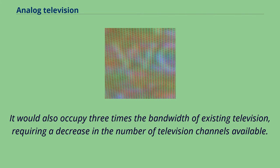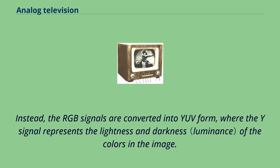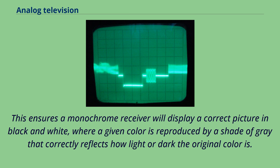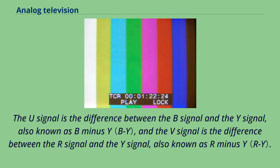Instead, the RGB signals are converted into YUV form, where the Y signal represents the lightness and darkness of the colors in the image. Because the rendering of colors in this way is the goal of both black and white film and black and white television systems, the Y signal is ideal for transmission as the luminance signal. The U and V signals are color difference signals. The U signal is the difference between the B signal and the Y signal, also known as B minus Y, and the V signal is the difference between the R signal and the Y signal, also known as R minus Y.